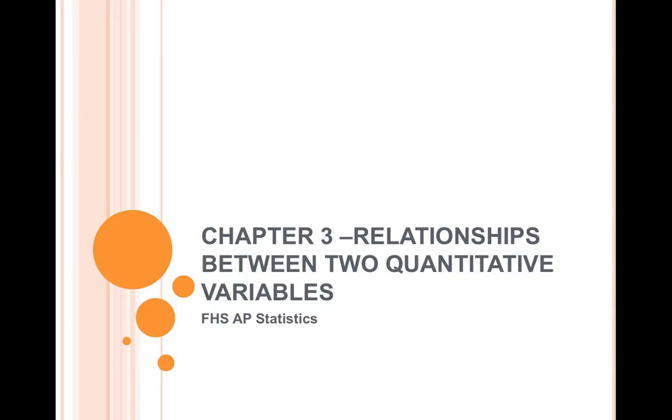So we are beginning Chapter 3, which is about relationships between two quantitative variables. As a reminder, the word quantitative means that these variables are numerical. They are variables that can be counted or measured, such as height, weight, GPA, salary. And so in this chapter, we're going to be looking at the relationship between two of these variables at a time. So for example, is there a relationship between people's heights and their weights? Those are both quantitative variables.